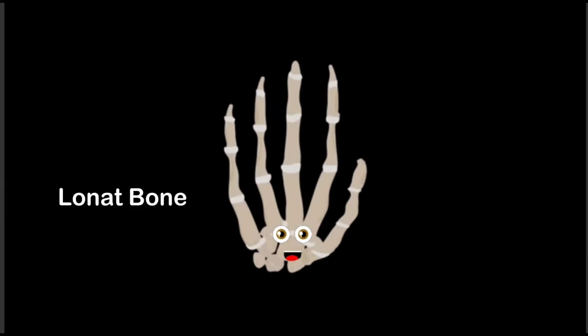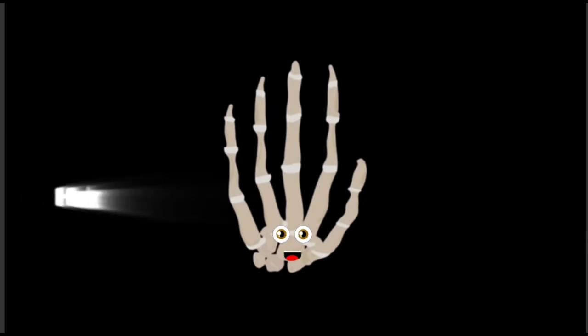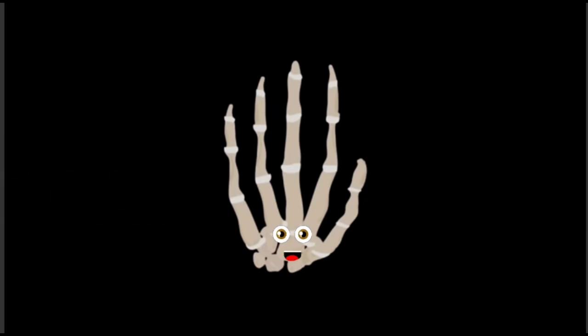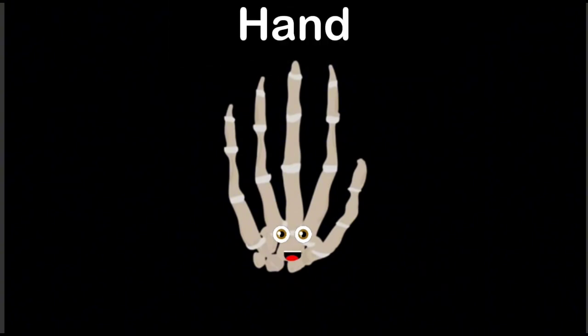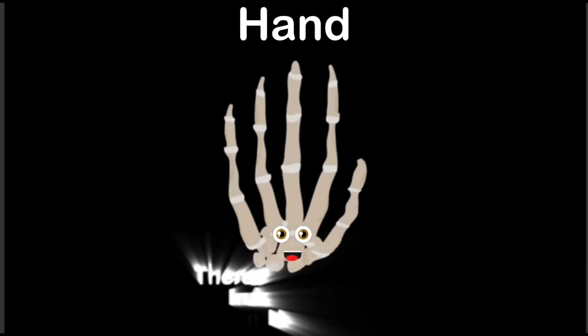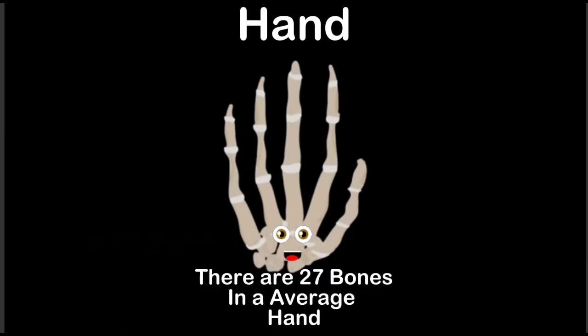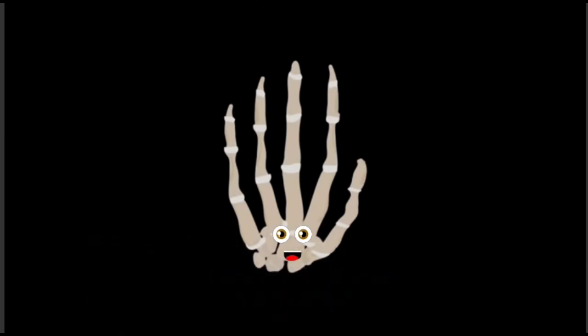The pisiform bone is the next on the list, then the lunate bone at the end of your wrist. That concludes the hand bones — I hope you got the gist. Without these bones your hand would never bend or twist. How about I lend you a hand and tell you about me — there are 27 bones in the average hand.